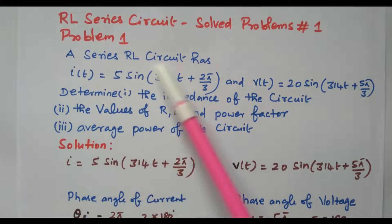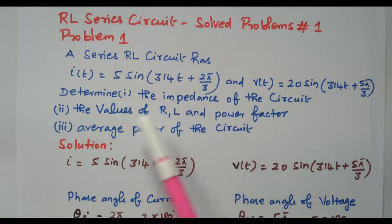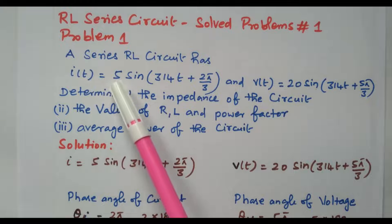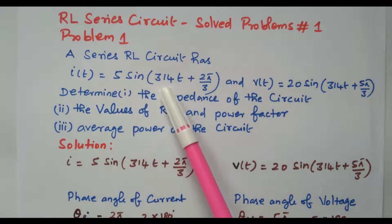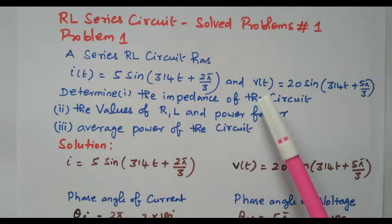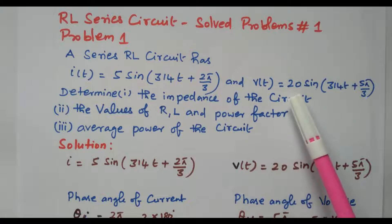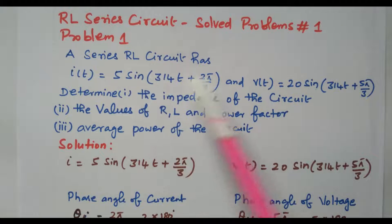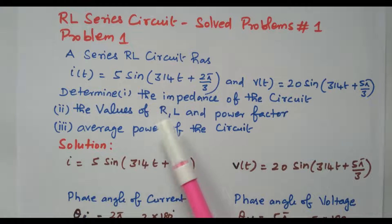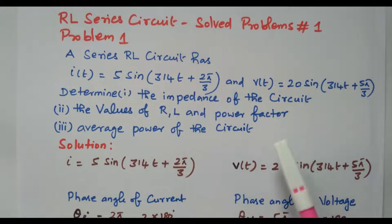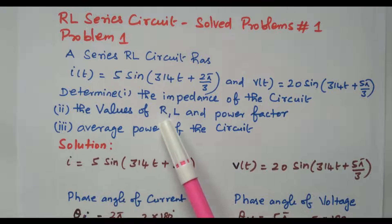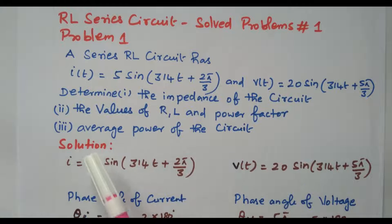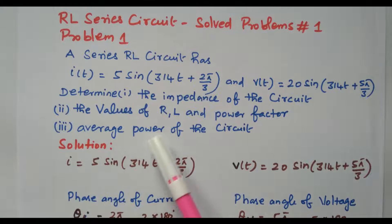A series RL circuit has the following voltage and current equations given: i(t) = 5 sin(314t + 2π/3), and similarly, v(t) = 20 sin(314t + 5π/3). We need to determine: impedance of the circuit, the values of R and L, the power factor, and the average power of the circuit.